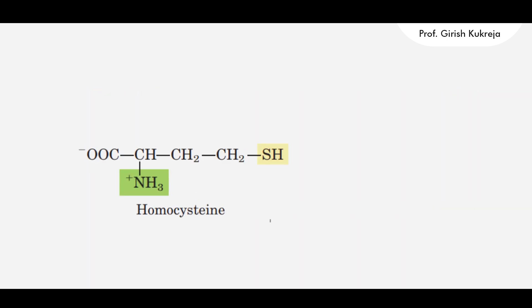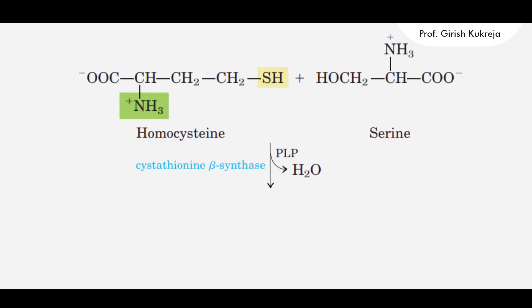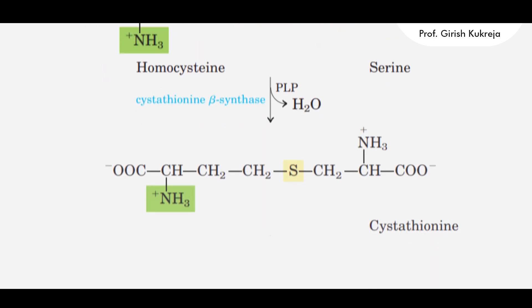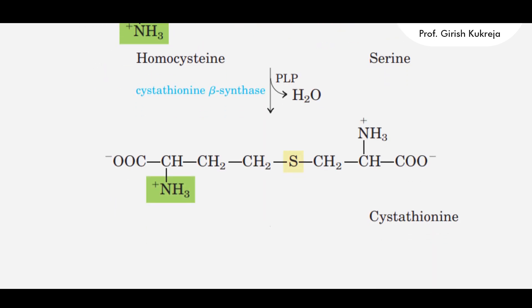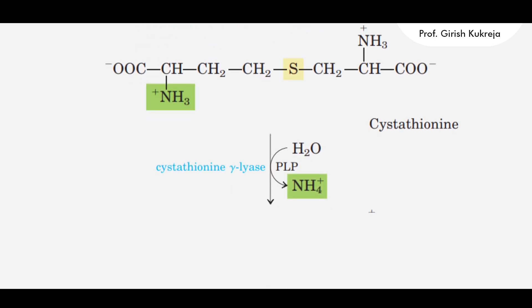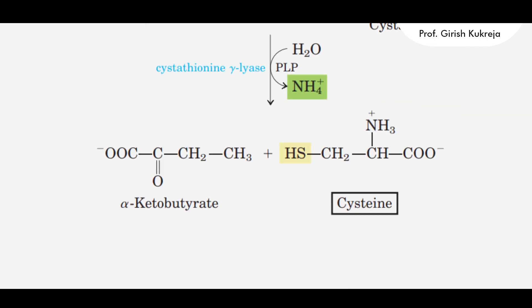The free homocysteine then combines with serine in a reaction catalyzed by cystathionine beta-synthase, resulting in the formation of cystathionine. This cystathionine is acted upon by cystathionine gamma-lyase via removal of the amino group, resulting in the formation of alpha-ketobutyrate and cysteine.